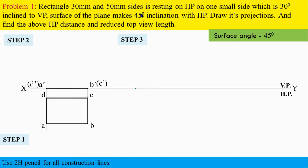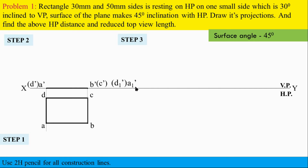Leave a gap of two to three centimeters between step two and step three. Mark the resting edge point on the XY — the edge resting is a-dash d-dash, so mark that point in step three first and name it a1-dash and d1-dash.